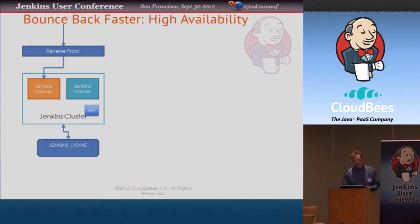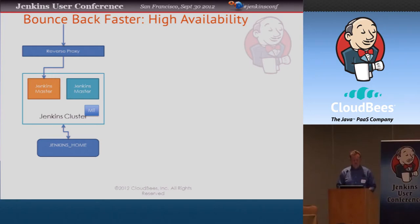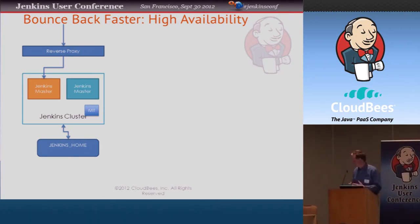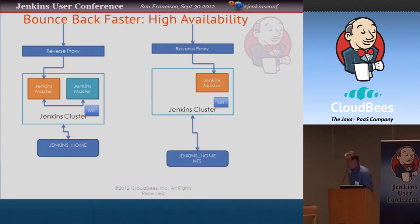This brings us to one of the biggest topics — the title of this talk — which is how can you come back faster in the event of some kind of issue. If you have a problem with the Jenkins master or the system it's running on, how can you get up and running again faster, and how can you do it without having to jump in and do that yourself? This whole support for high availability within Jenkins is something Kosuke is itching to tell you about, so let me hand over.